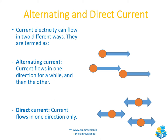Current electricity can flow in two different ways. We have alternating current, where current flows in one direction for a while and then can go in the opposite direction — that's what the diagram represents. Or we have direct current, which flows in one direction only. These are referred to as AC — alternating current — and DC — direct current.